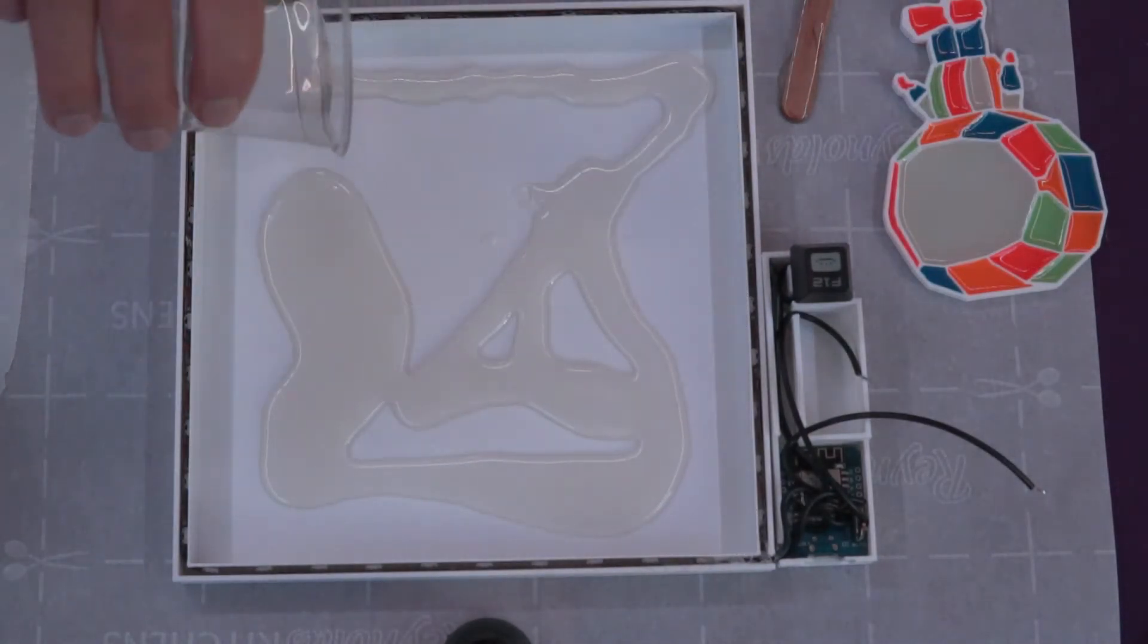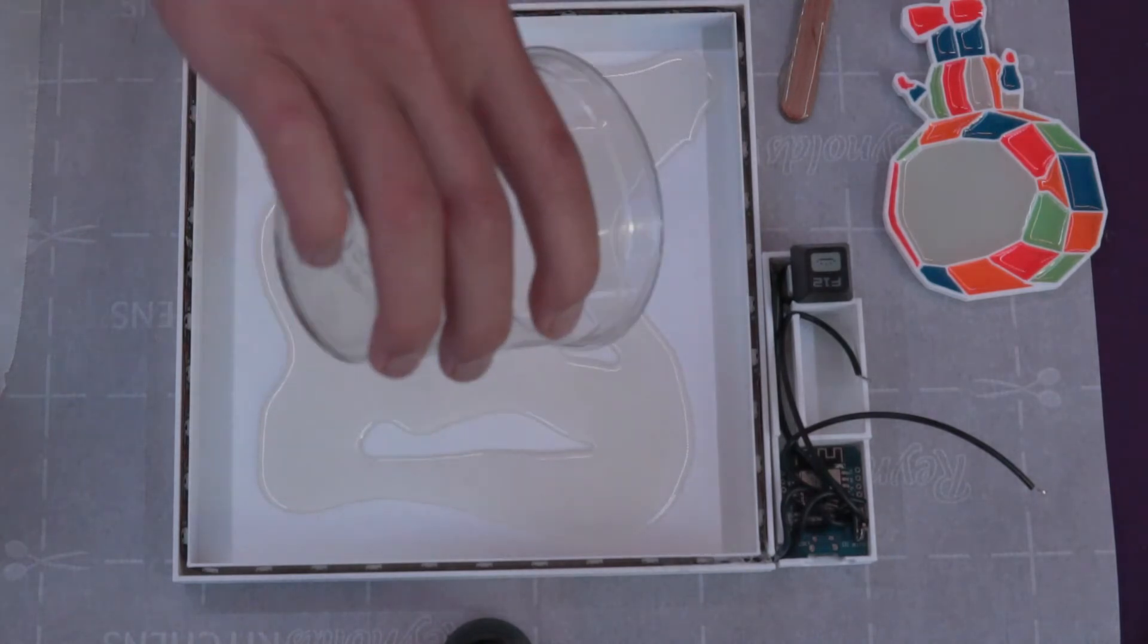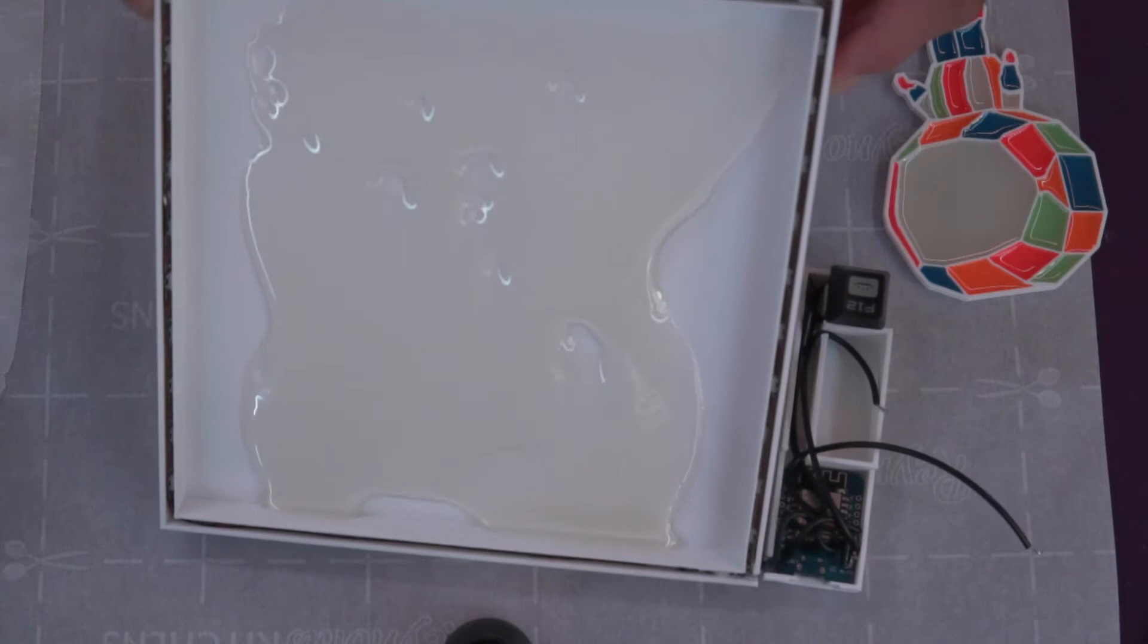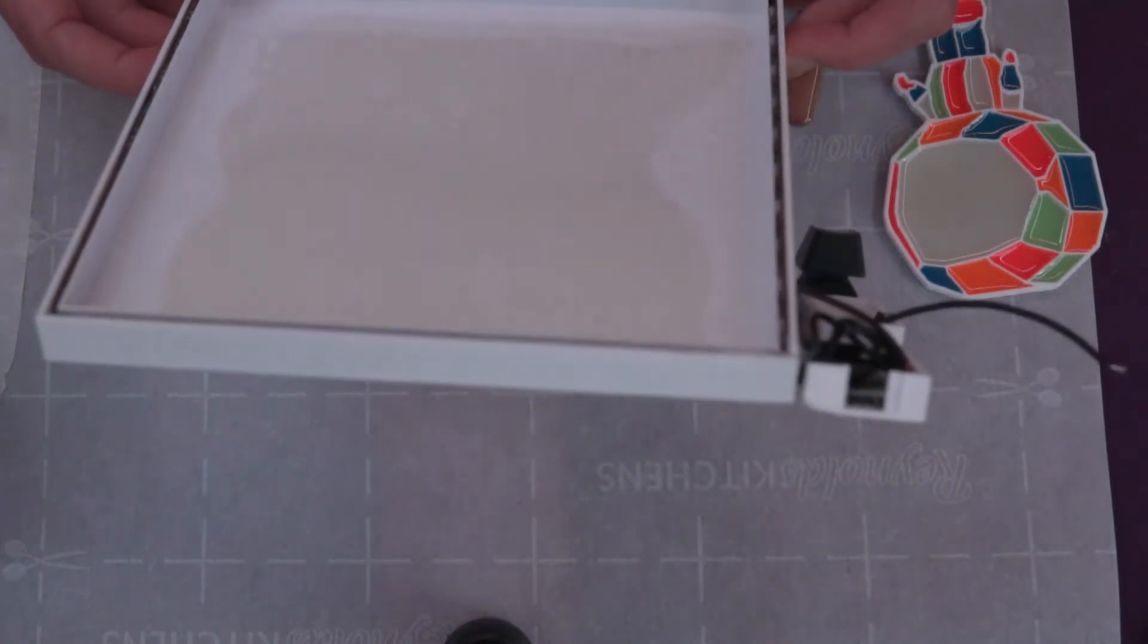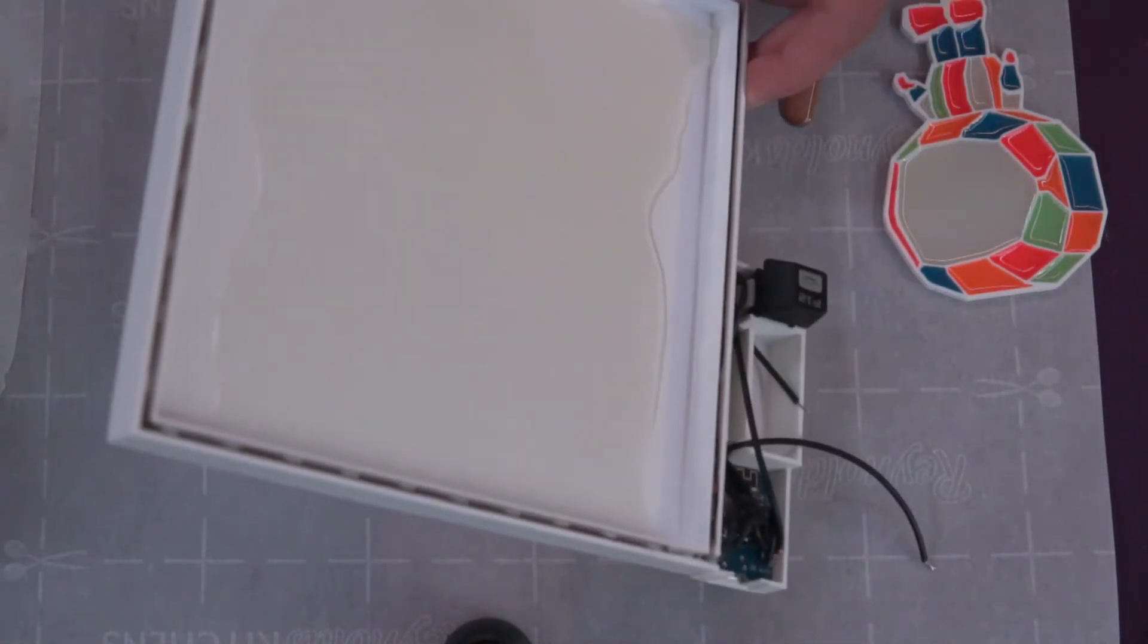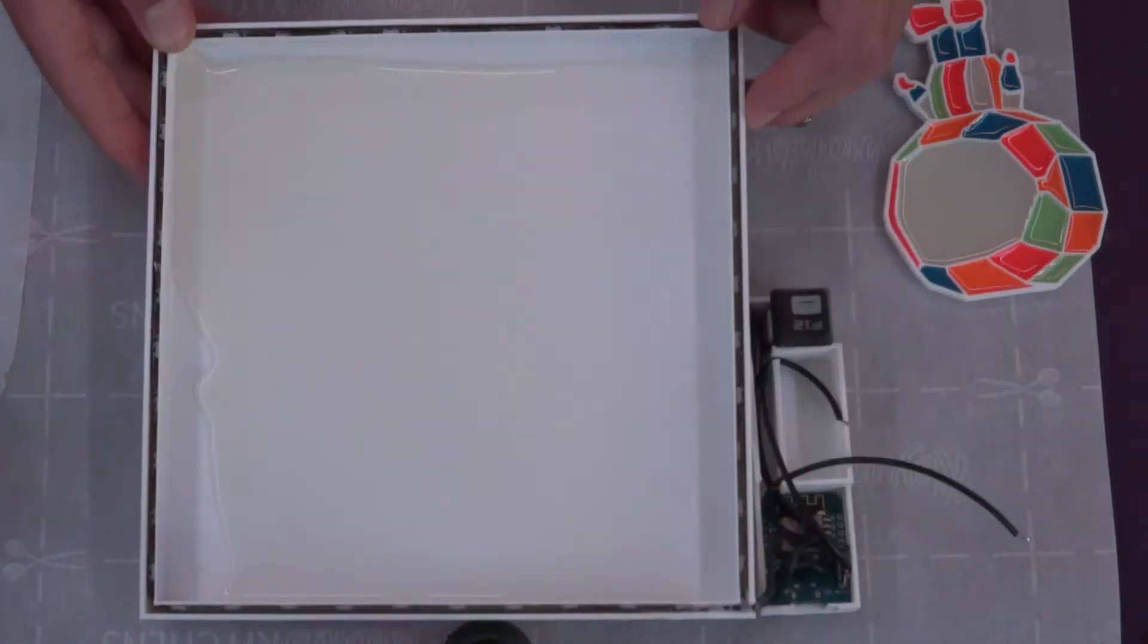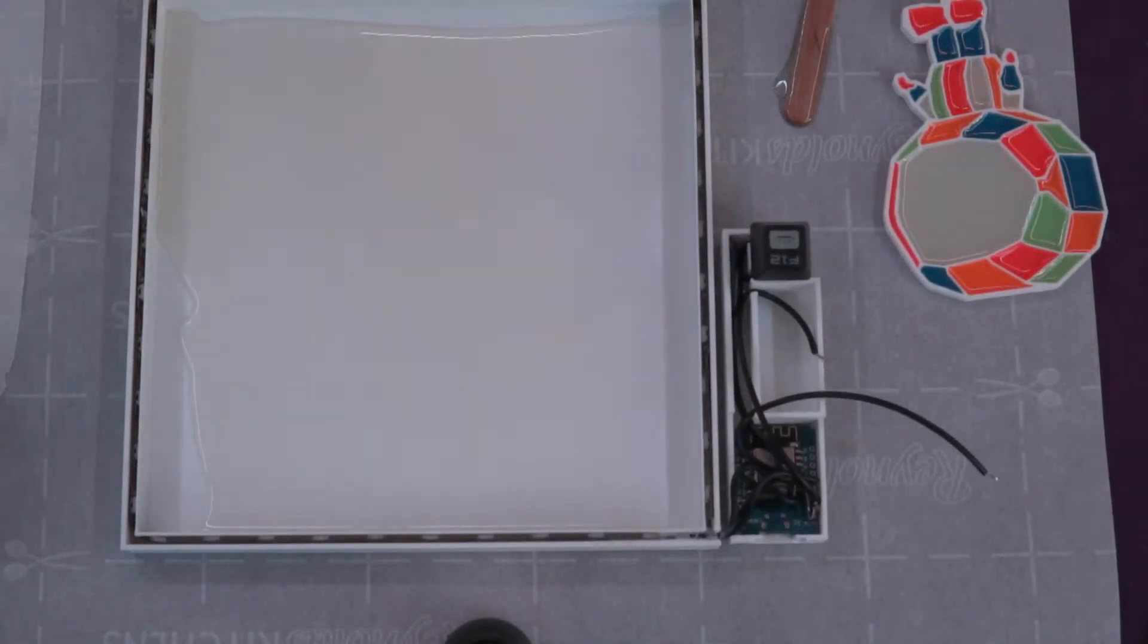Epoxy pouring isn't the most interesting thing but it's one of the most important steps. The first layer is maybe the most important. I pour a very thin layer and let it sit for 45 minutes so it can get fully tacky. That way when I put the astronaut in the center it won't drift during the rest of the pours.